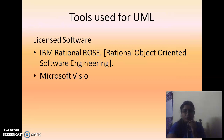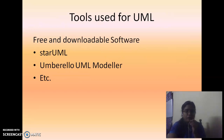There are two types of UML tools: licensed and non-licensed. Licensed tools include IBM Rational Rose, which stands for Rational Object Oriented Software Engineering, and Microsoft Visio. Non-licensed or freeware tools include Star UML and Umbrello, among many others available for drawing UML diagrams.